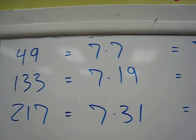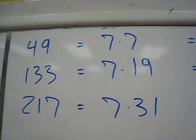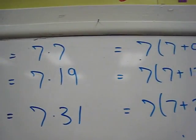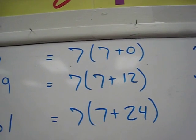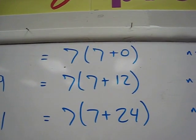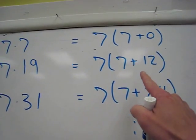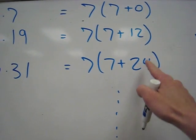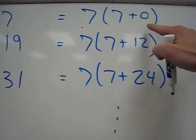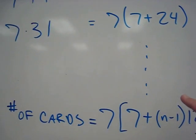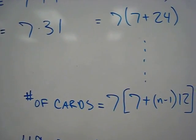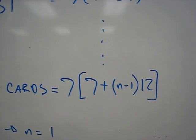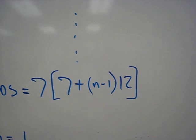So seven, 49 is seven times seven, 133 is seven times 19, 217 is seven times 31. Well, you can also write it like this. All right. So seven and the 19 is seven plus 12, 31 is seven plus 24. So you can see this column over here is increasing by 12 each time. So it comes on down. So now our number of cards equals seven times the quantity of seven plus n minus one times 12. And n is any number from one to infinity.